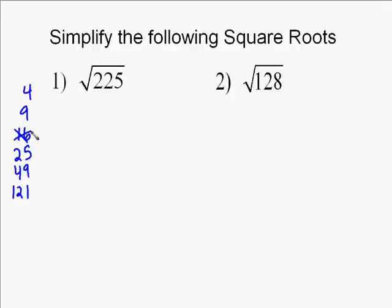So the first thing we do is try to factor 225 into perfect squares. Well, 4 doesn't go into 225, but 9 does. And 9 goes into it 25 times.